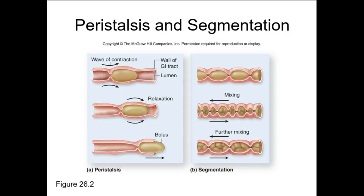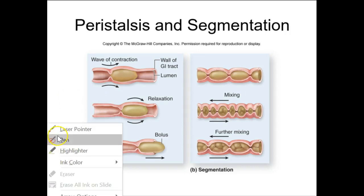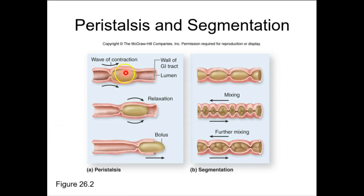Peristalsis is very intuitive — don't overthink it. All we're saying is that there are coordinated smooth muscle contractions that help move a food bolus forward through the digestive tract. There is circumferential and longitudinal smooth muscle in the walls of the intestines and esophagus, and they contract in waves — contracting here, then there, then there — moving the food bolus forward.